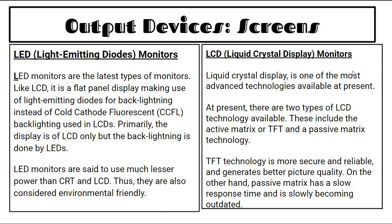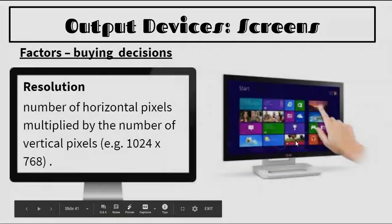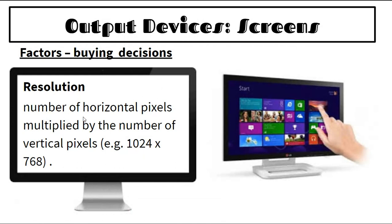LCD is still one of the most advanced technologies, with two types: active matrix (TFT) and passive matrix. TFT is more secure, reliable, and generates better picture quality. Passive matrix has a slow response time and is becoming outdated. When buying a screen, look at resolution — horizontal pixels multiplied by vertical pixels.